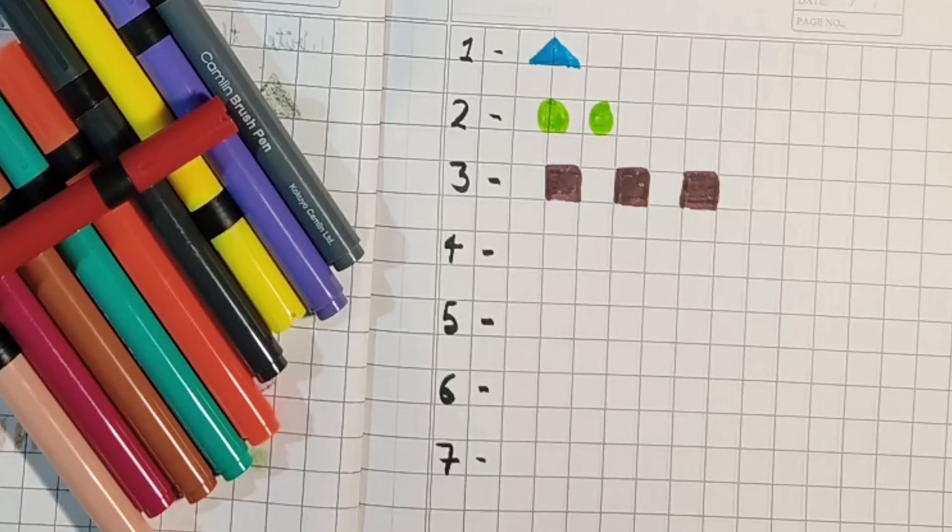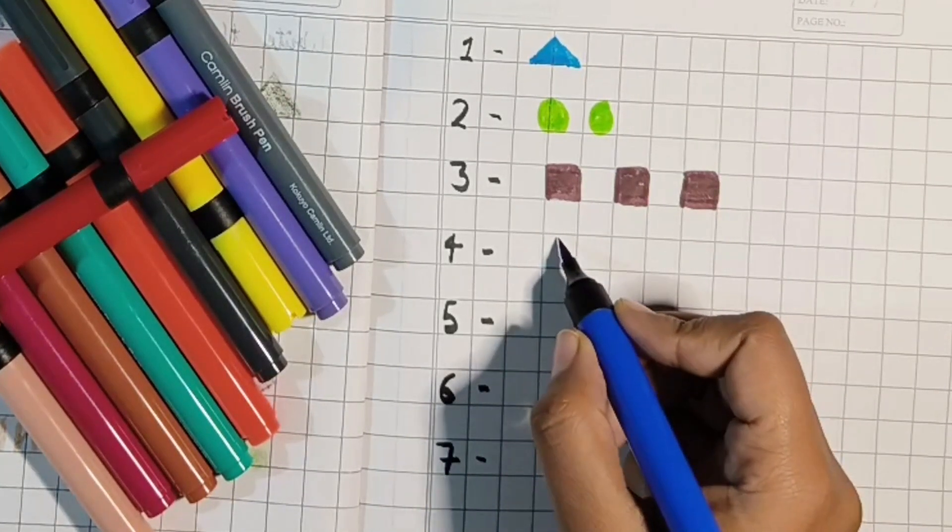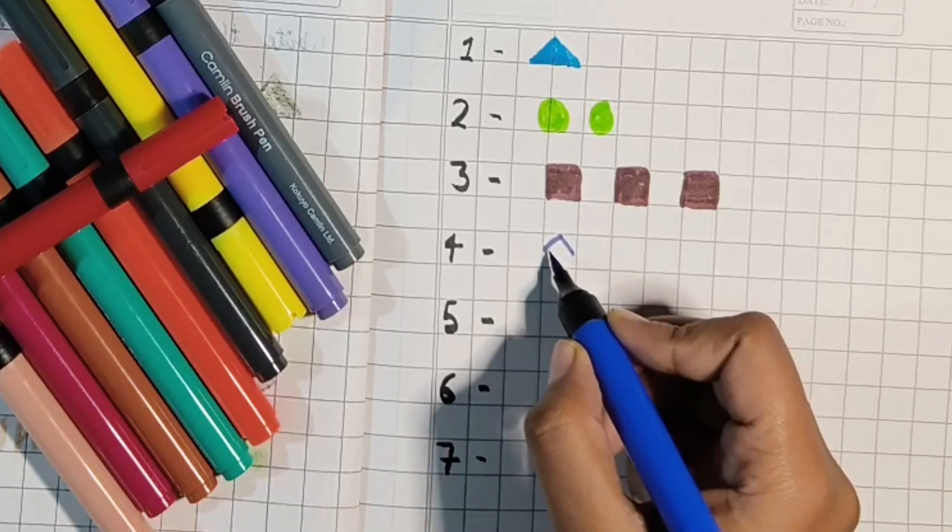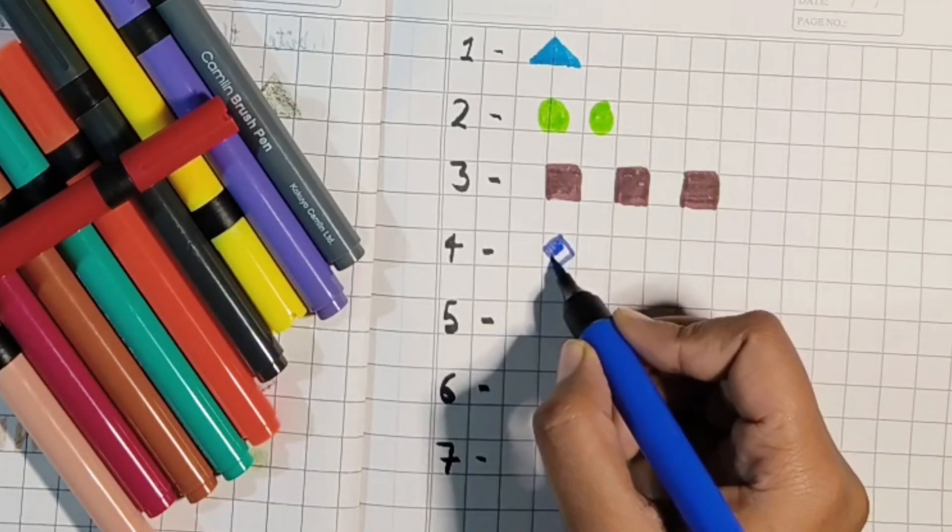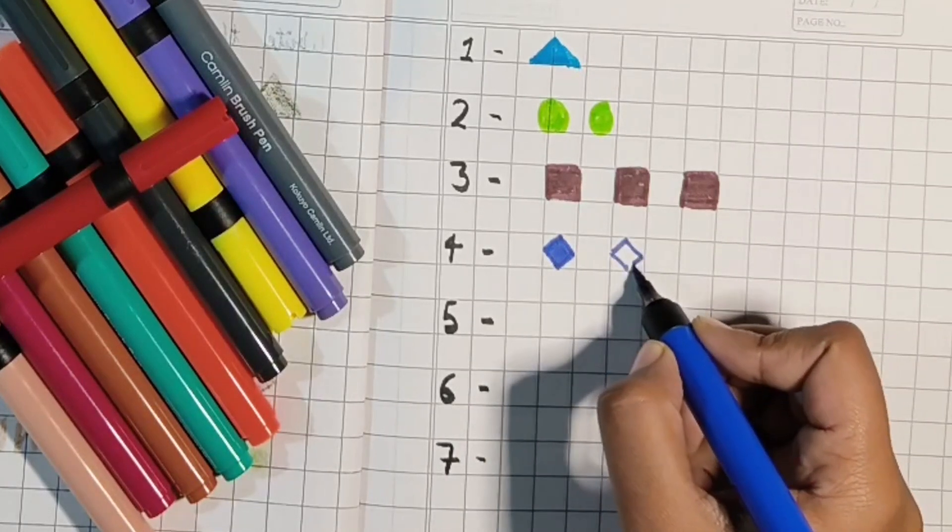Next is four. For four, we will make four diamonds. Whatever shape you like, you just have to make that many in front of that number.